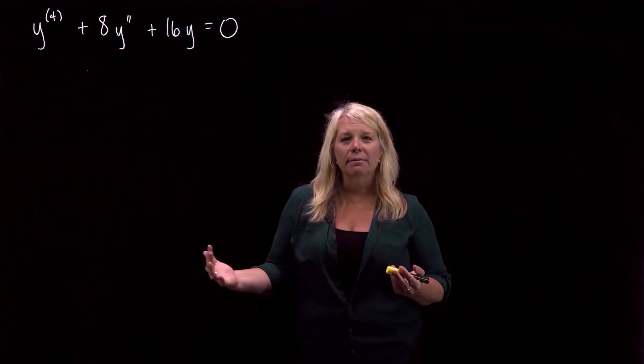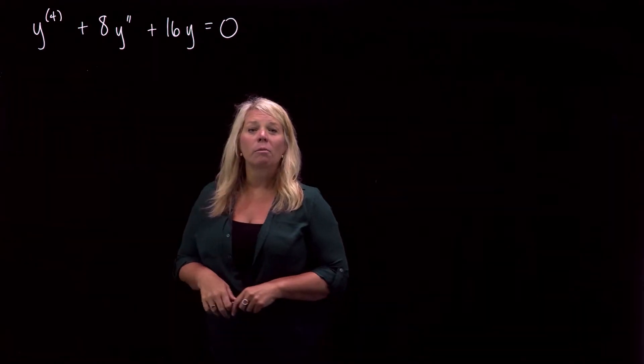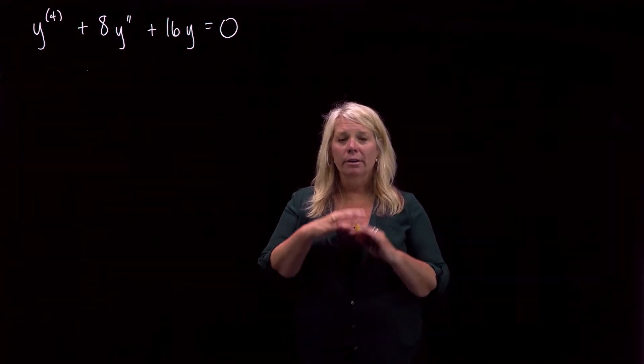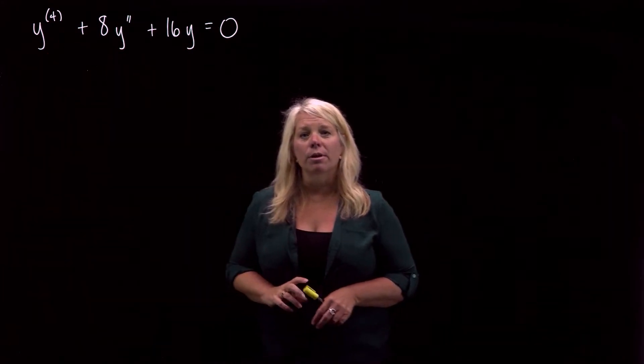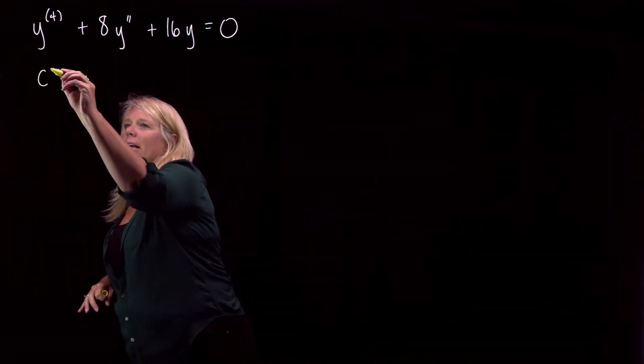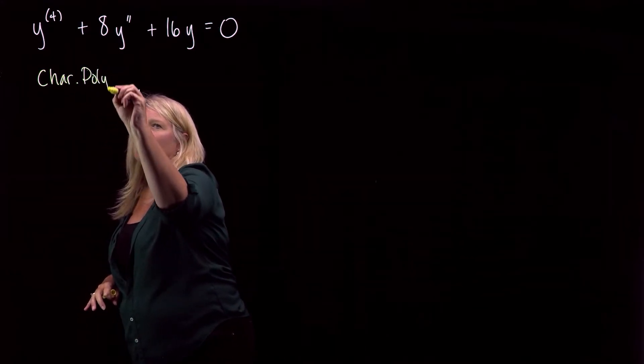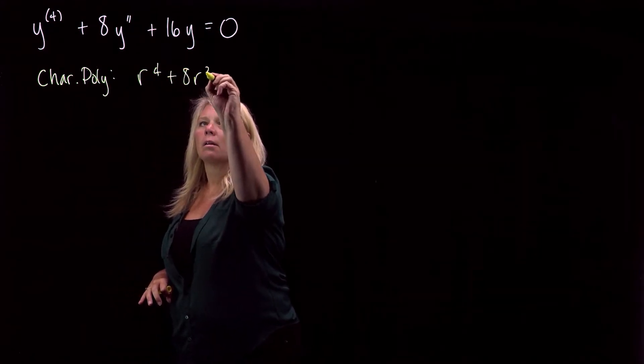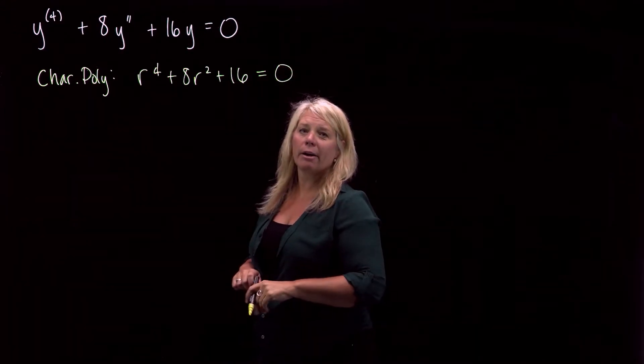And so just like the other ones that we've done like this, we're going to start by writing our characteristic polynomial. We're looking for four linearly independent solutions in order to build that general solution. Four because we have a fourth order differential equation. So we just start by writing down our characteristic polynomial.